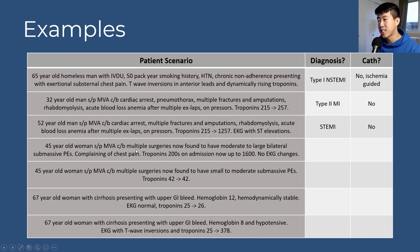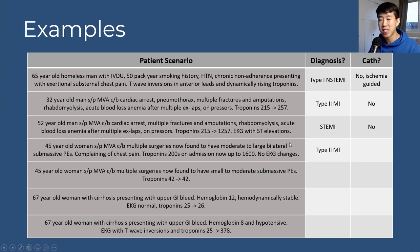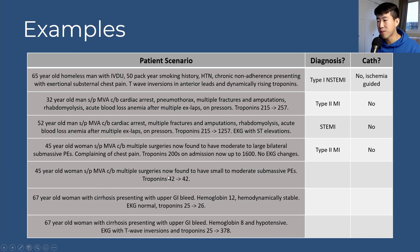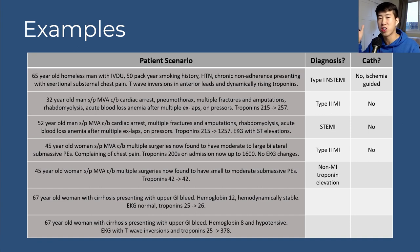Scenario 10: 45-year-old woman with motor vehicle accident, surgeries, and moderate-to-large bilateral submassive PEs with chest pain, troponins from 200 to 1,600, and no EKG changes: type 2 MI from supply-demand mismatch due to hypotension and cardiac strain from PEs. No cardiac cath. A similar patient with small-to-moderate PEs and troponins 42 to 42 is a non-MI troponin elevation — no dynamic rise means no infarction, just chronic myocardial injury. No catheterization either.